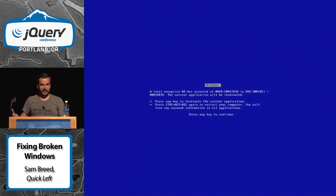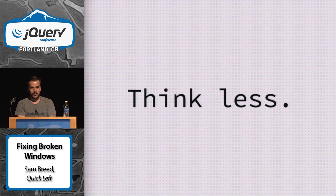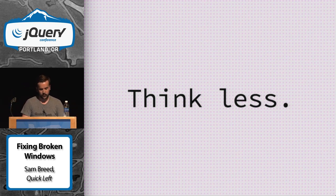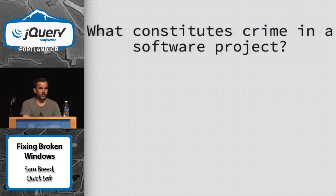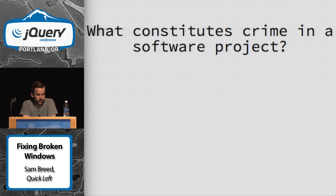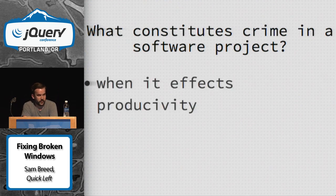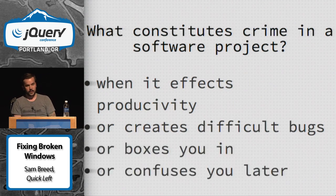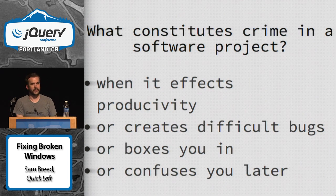This is about thinking less and doing little things every day that reduce the overall cognitive load it takes to look at your code. There are about 10 things we can do to stop crime from occurring in a software project. What constitutes a criminal action? When it affects productivity, creates difficult bugs, boxes you in, or confuses you later — those are things you know you can stop, and you're just being lazy if you don't.